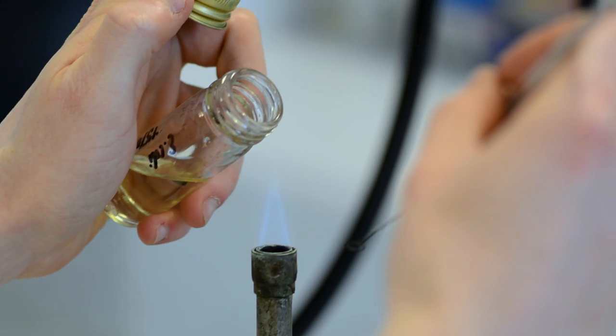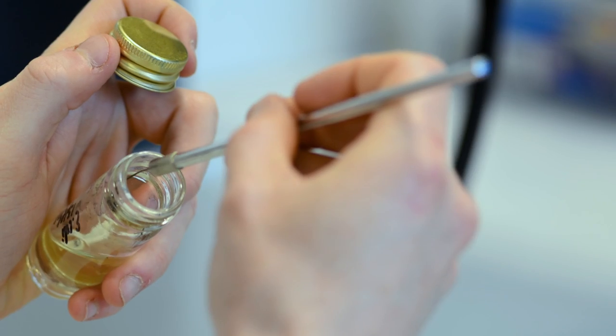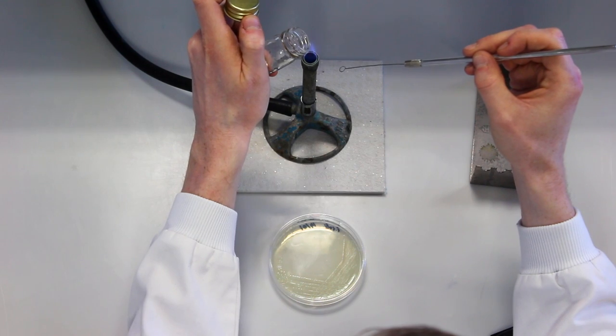The bottle is slightly tilted and the inoculum on the loop is rubbed onto the inside of the glass bottle, so that when the bottle is upright, the inoculum is submerged.